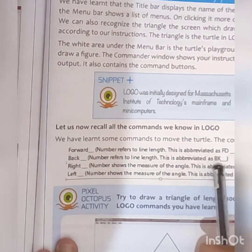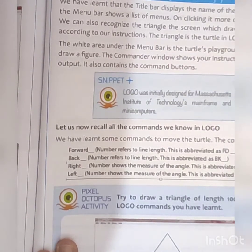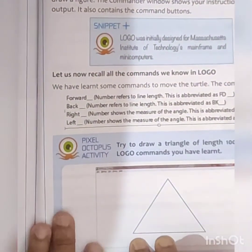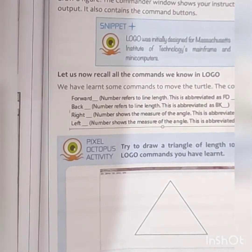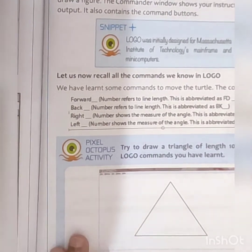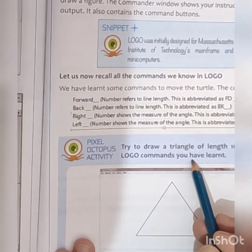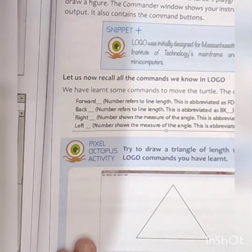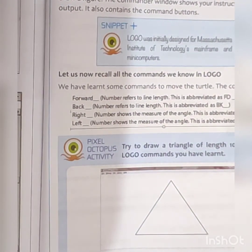The abbreviations are: FD, BK, RT, LT. So here is one question given — try to draw a triangle of length 100 using logo commands you have learned. There are a few more commands we will discuss.